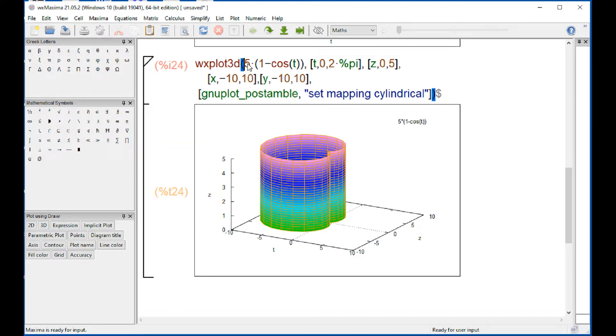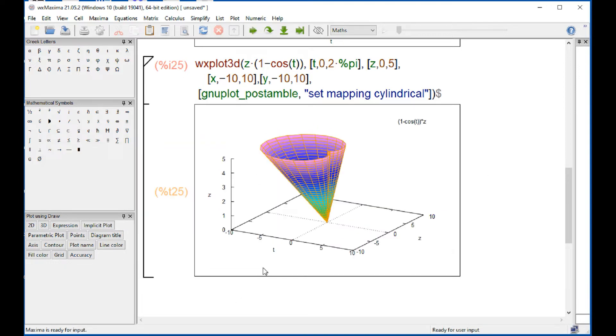Now let's change here to z multiplying the 1 minus cosine theta. So that's going to be an expanding kind of cone. Shift enter. There we go. As the z value increases, the value of multiplying the 1 minus cosine t will increase. I'm going to try one more, raising this to square. Shift enter. It gives me kind of an edge shape cone going up in that direction.